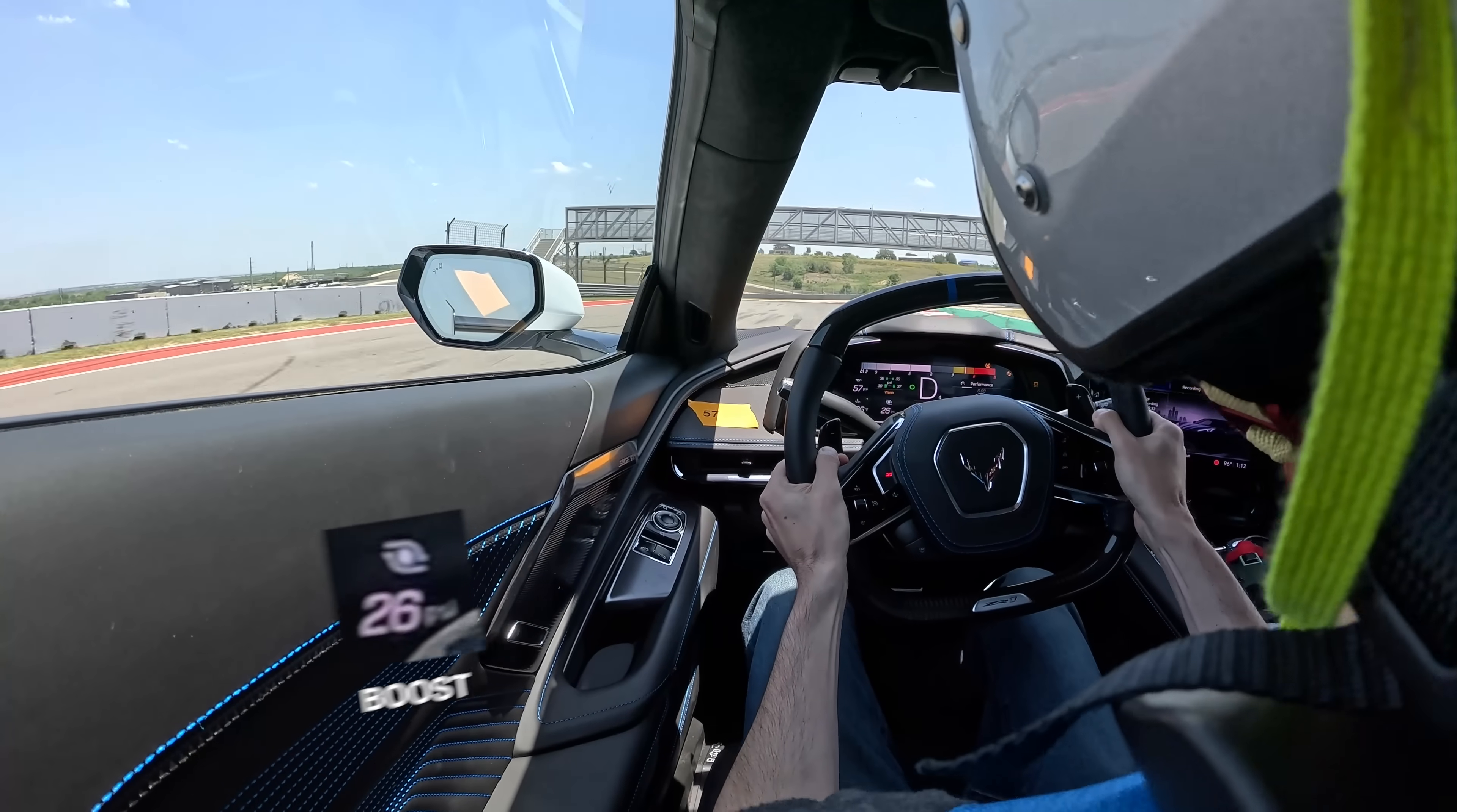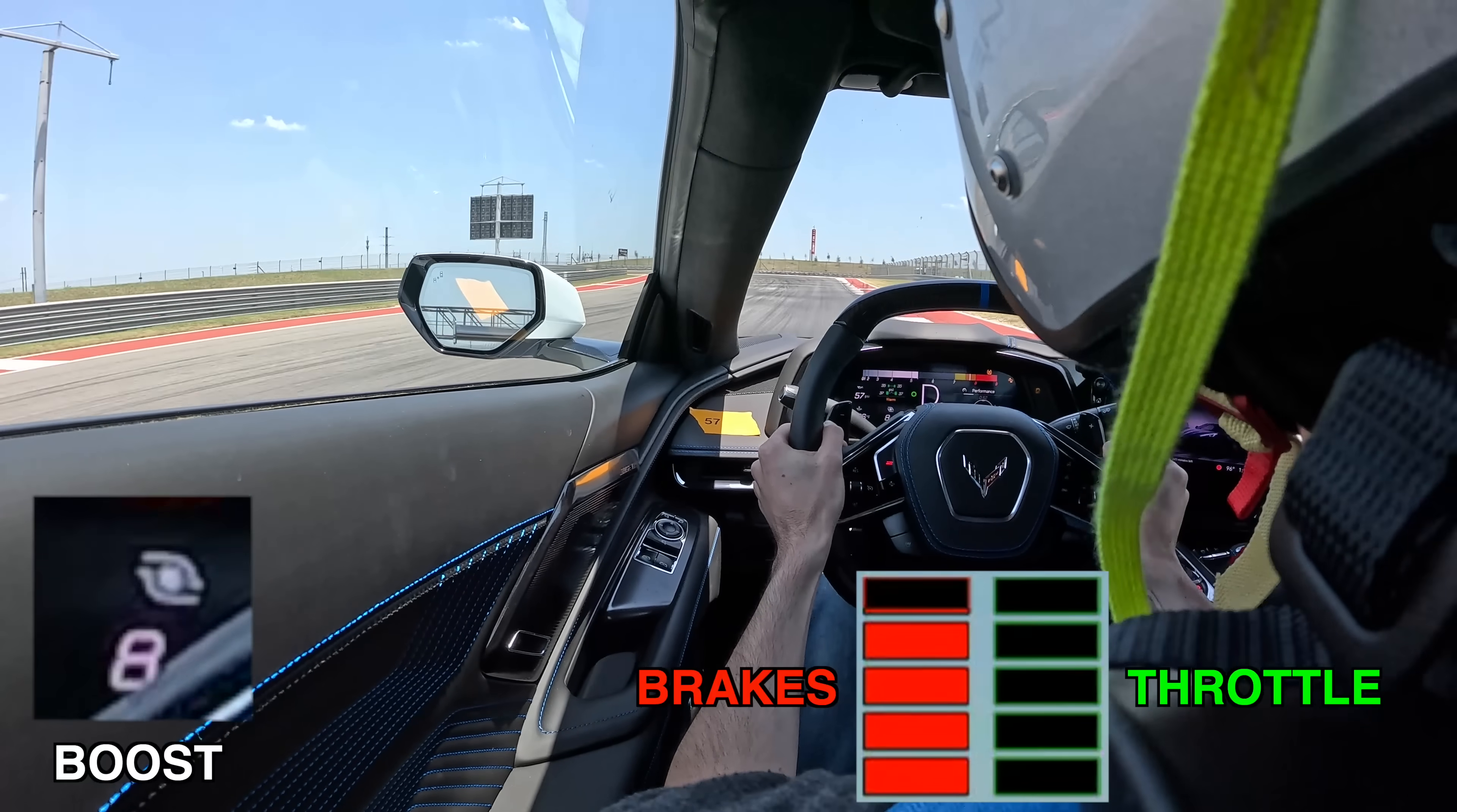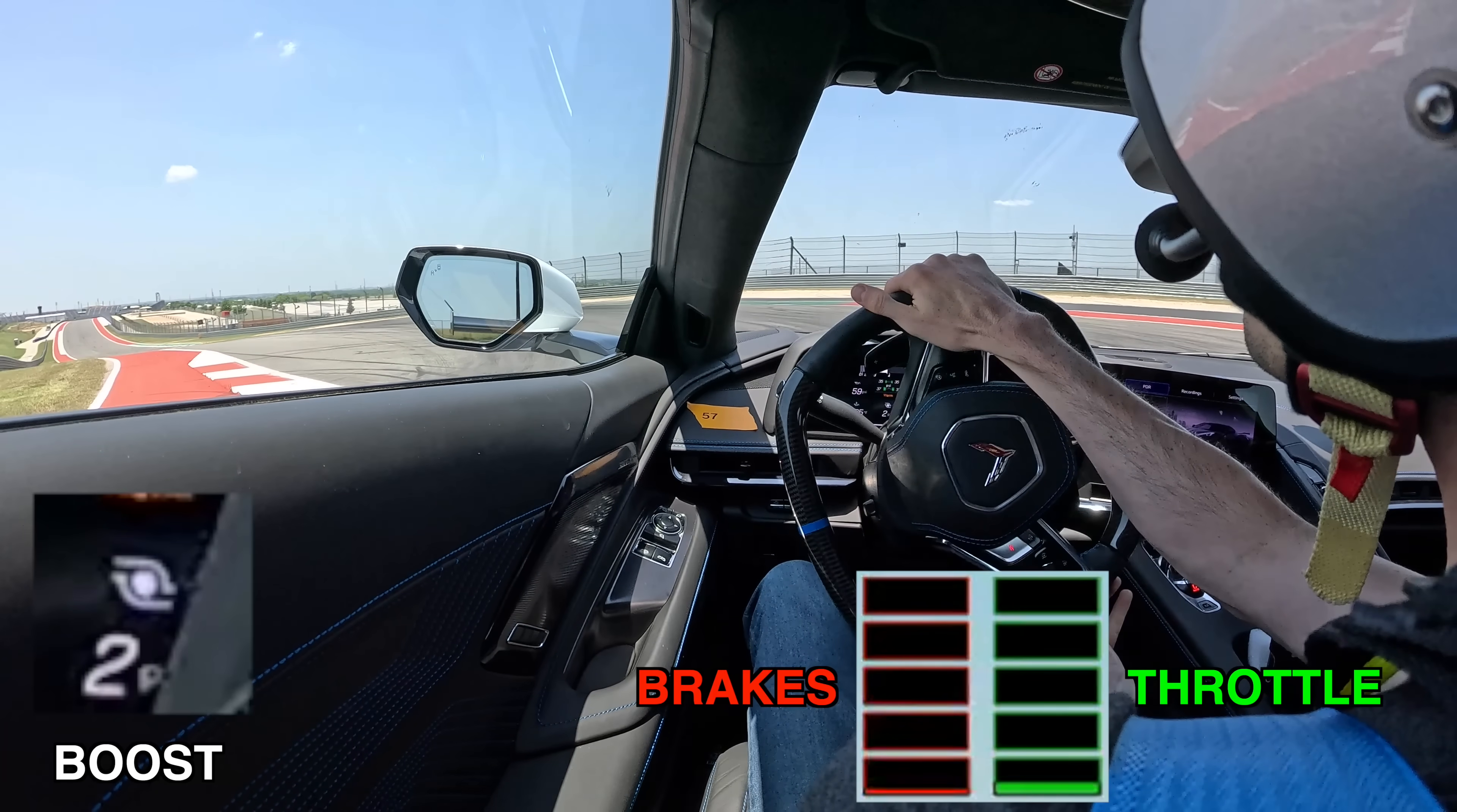But how about a real-world scenario? So here I am coming into a corner. You can see I'm at full boost with the boost gauge reading over 20 psi. Once I get on the brakes, boost pressure drops, but never below atmospheric. It maintains positive boost. And as I hit the apex of the corner, it's down to just 2 psi.